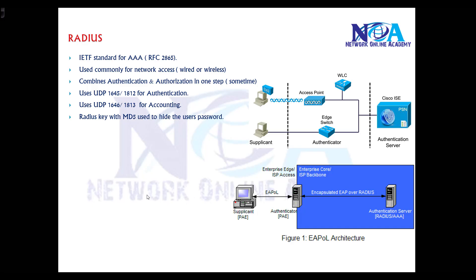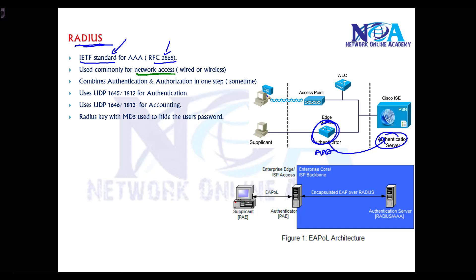The two protocols used between the Triple A client and the server are RADIUS and TACACS+. RADIUS is an IETF standard for AAA, defined in RFC 2865. It is commonly used for network access — when a user wants to connect to the network and must be authenticated, authorized, and have accounting performed.